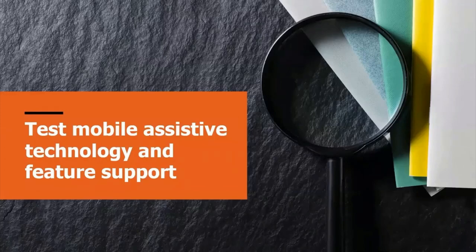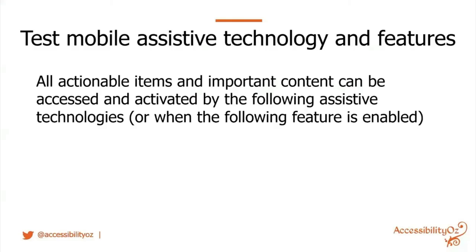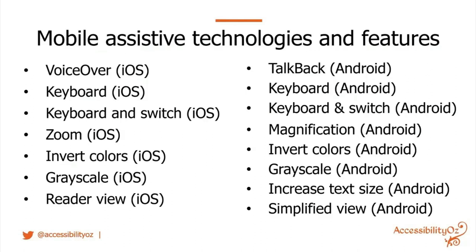The last step is to test mobile assistive technology and feature support. Essentially, all actionable items and important content must be accessible and activatable by various assistive technologies. On iOS, this includes VoiceOver, keyboard, keyboard and switch, zoom, invert colors, grayscale, and reader view. On Android, this includes TalkBack, keyboard, keyboard and switch, magnification, invert colors, grayscale, increased text size, and simplified view.